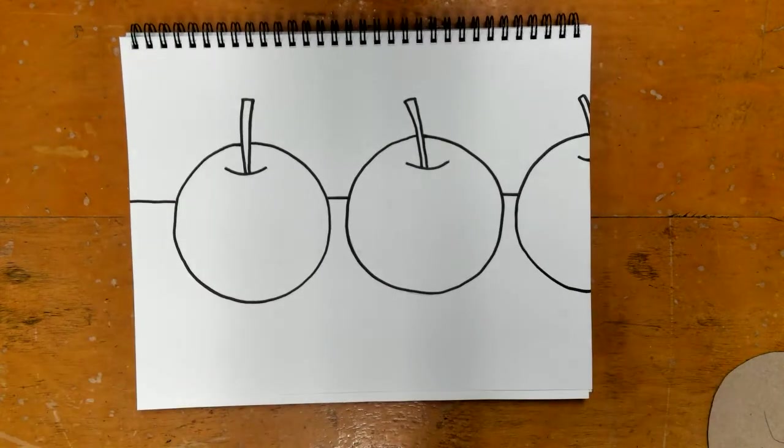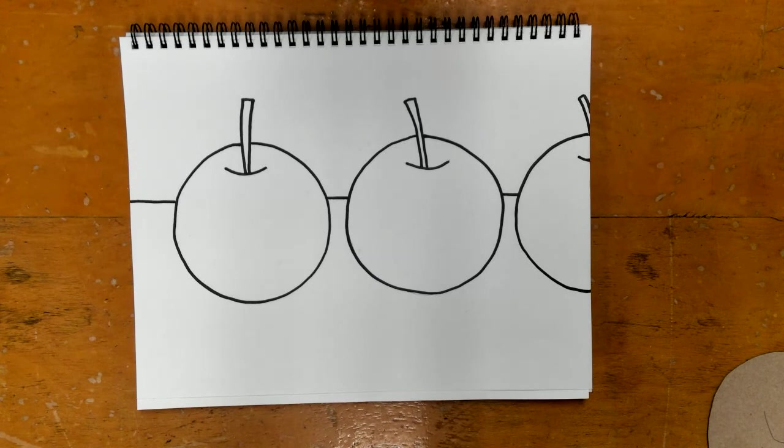That is as far as we are getting today. So we have three apples, we have our horizon line separating the table from the wall. Next class we are going to learn about how we are going to be adding color. We're actually going to be adding color with words. So check back in next week to find out how we do that. Hope that worked. Thank you.